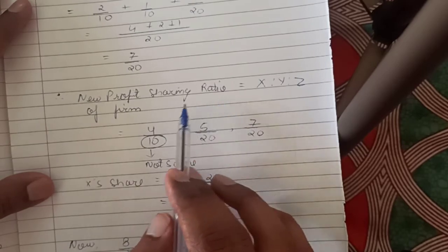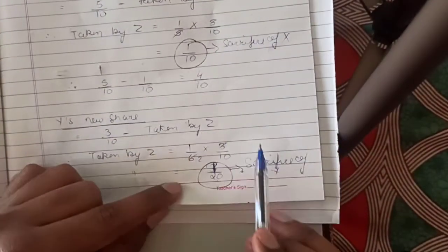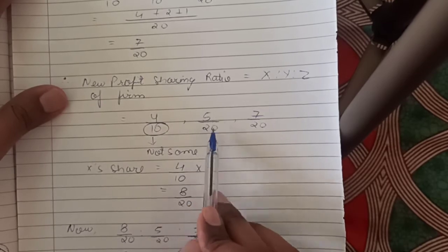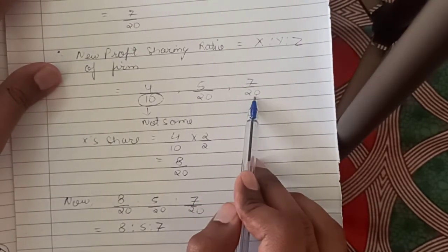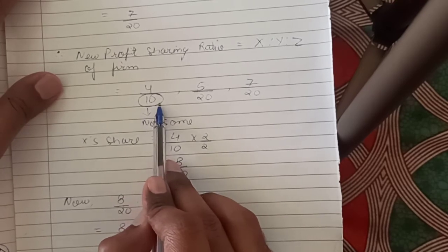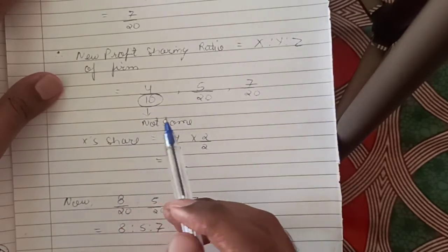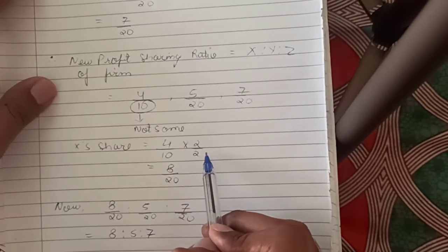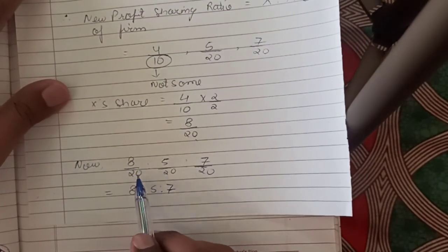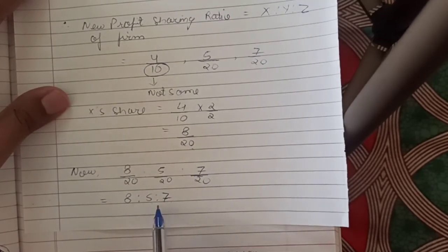The new profit sharing ratio of the firm: X has 4/10, Y has 5/20, Z has 7/20. We need the same denominator. Multiply X's share by 2/2: 4/10 = 8/20. Now all denominators are 20, so the new ratio X:Y:Z = 8:5:7.